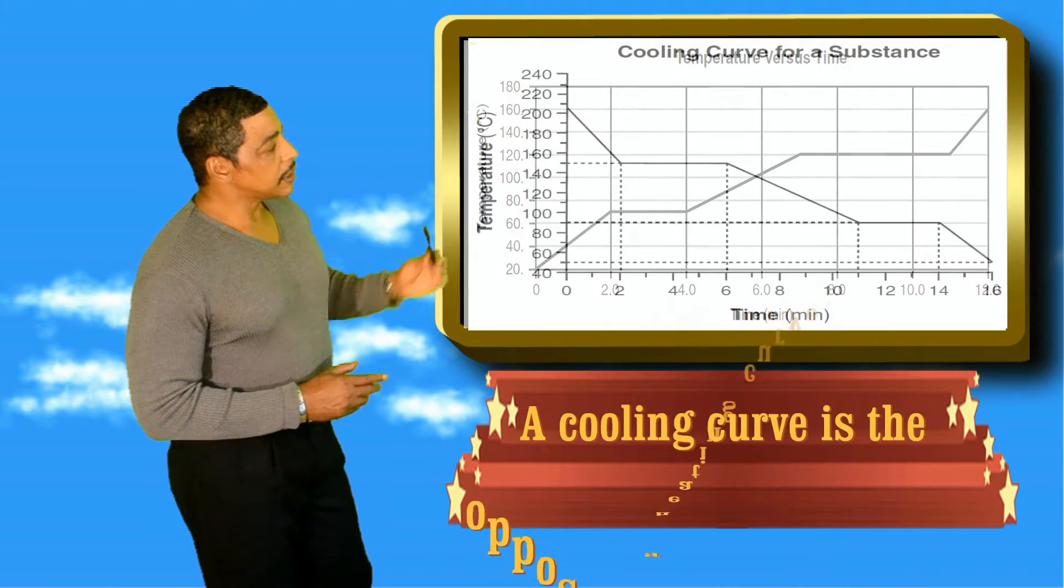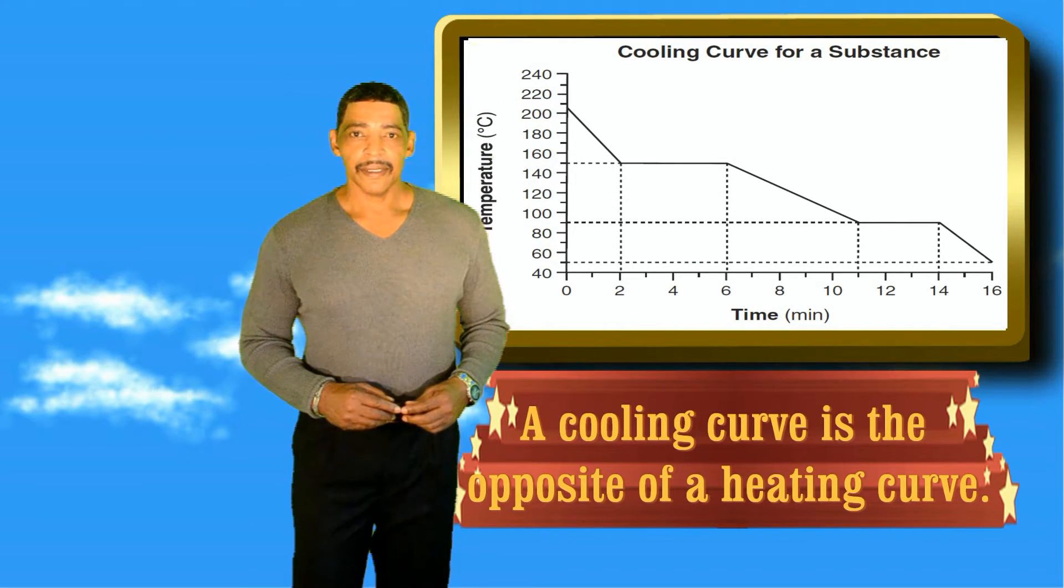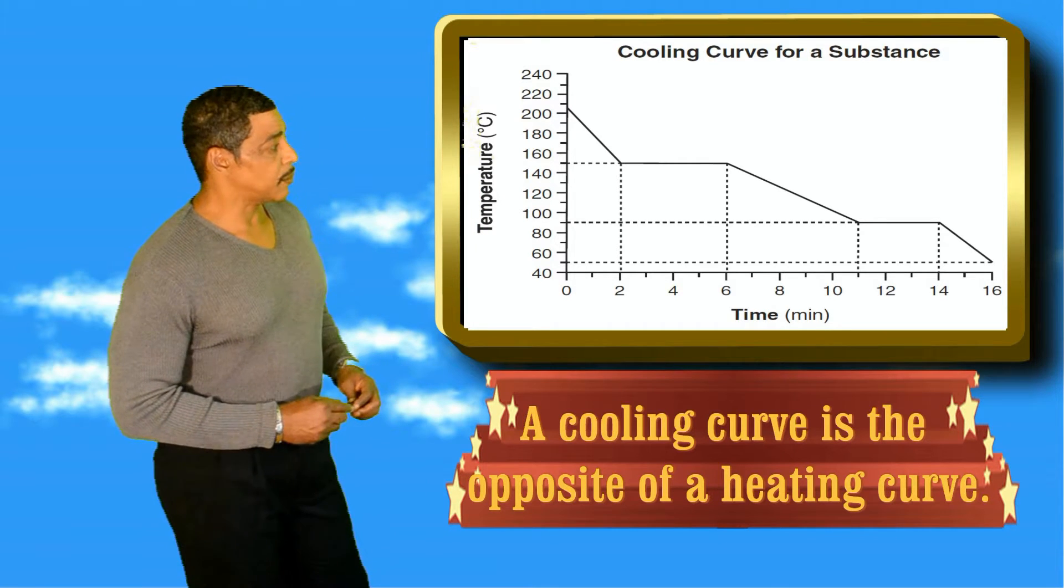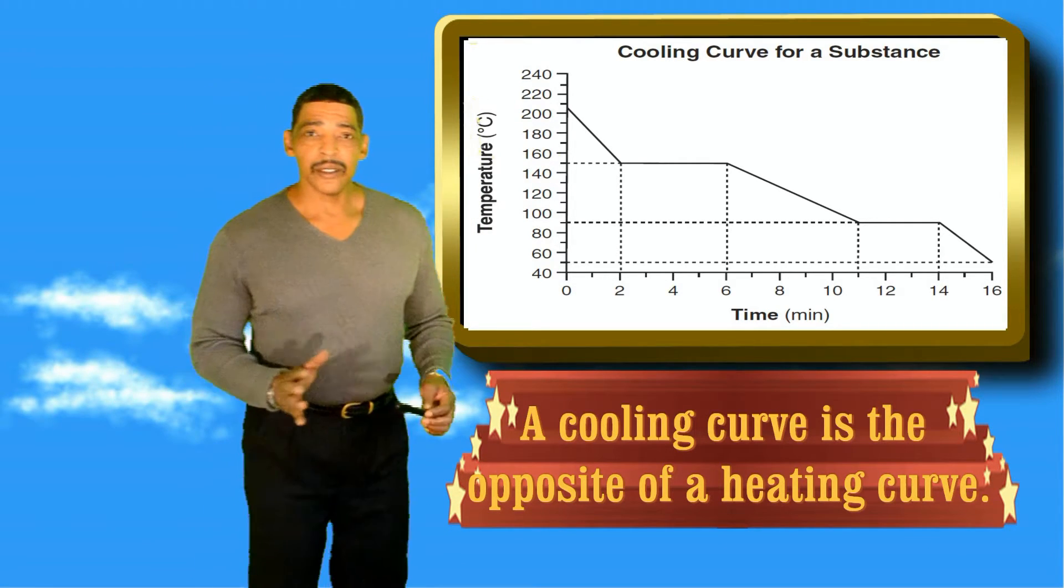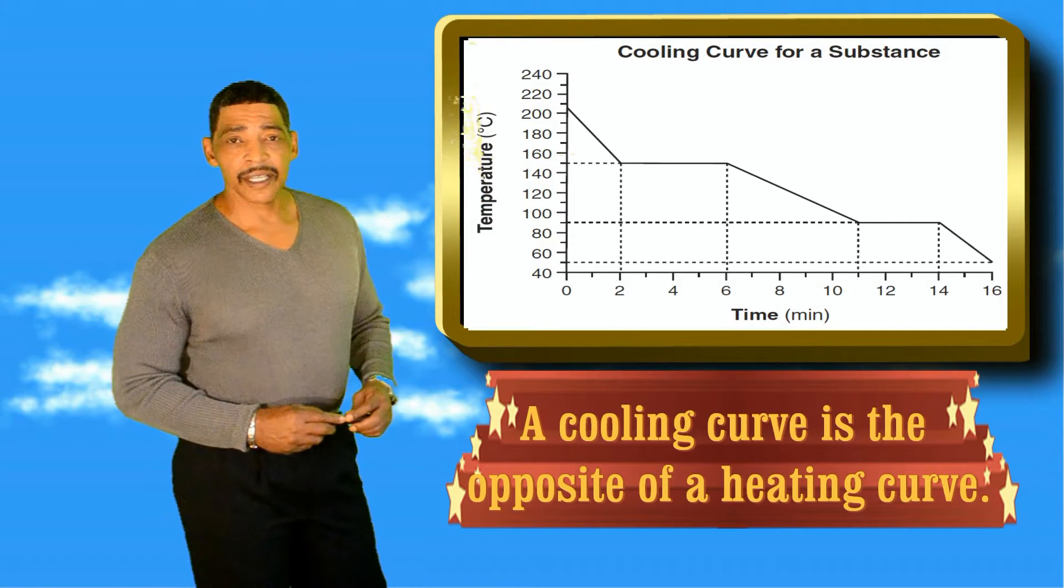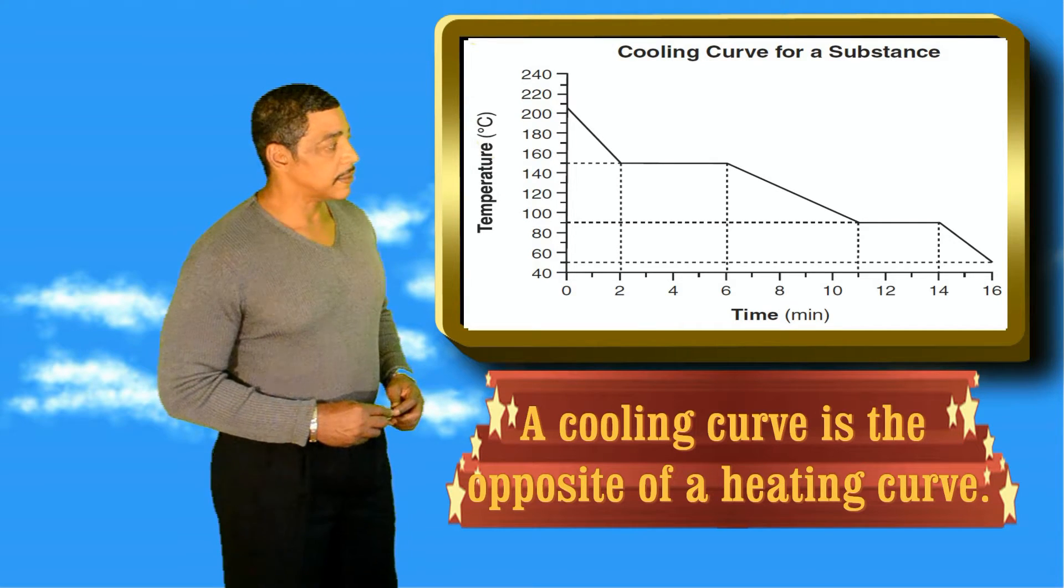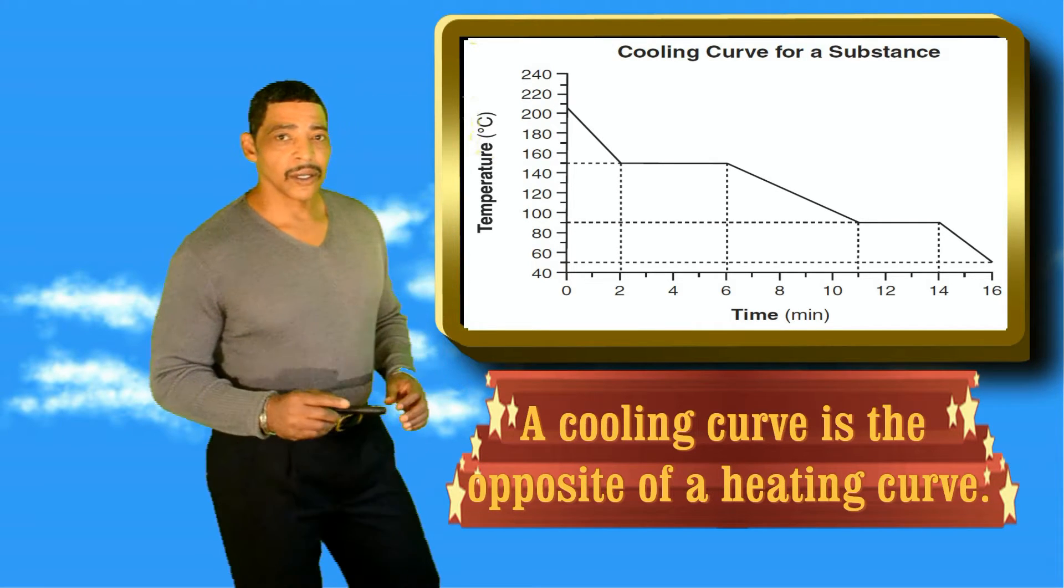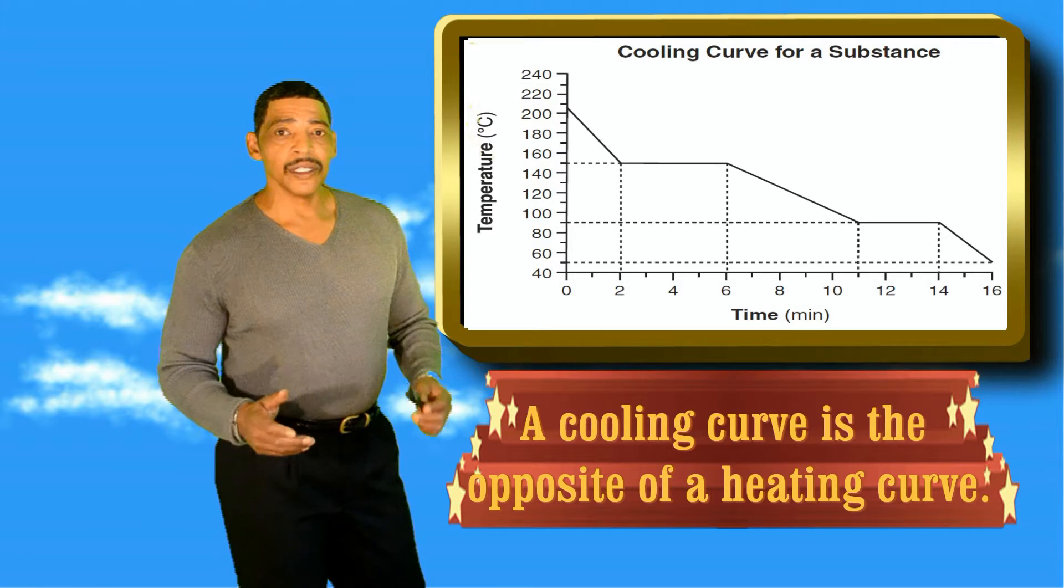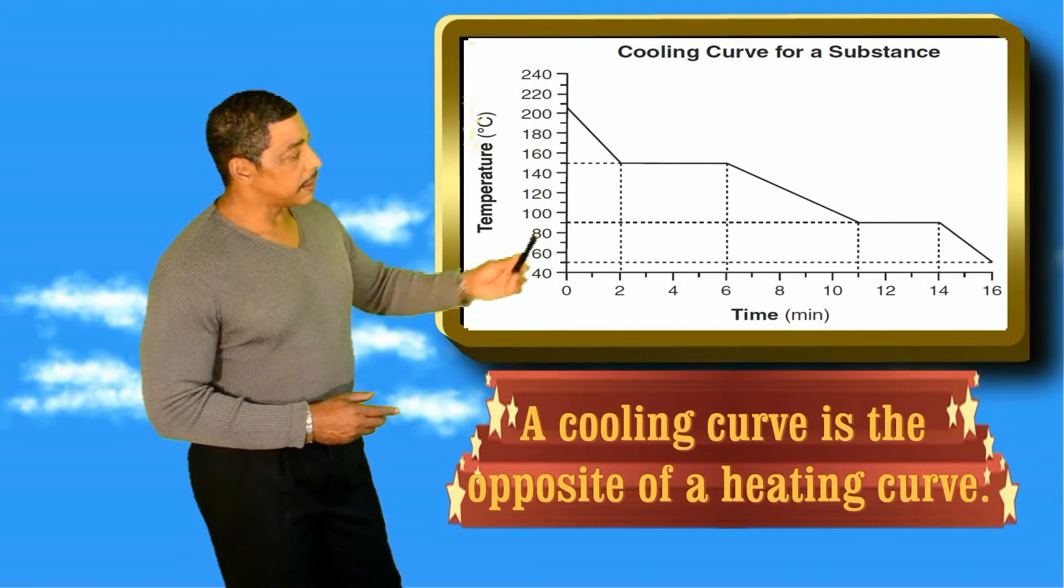A cooling curve is the opposite of a heating curve. This is the cooling curve of a substance other than water. How do I know this? Well, the first plateau, which is the point of condensation, occurs at 150 degrees Celsius, and the second plateau, which represents the freezing or point of solidification, occurs at 90 degrees Celsius.